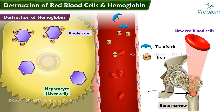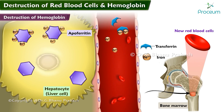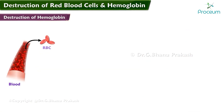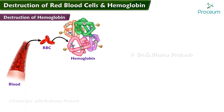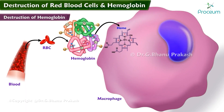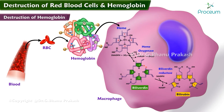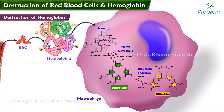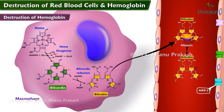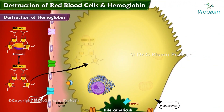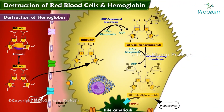for storage in the form of ferritin. The porphyrin portion of the hemoglobin molecule is converted by the macrophages through a series of stages into the bile pigment bilirubin, which is released into the blood and later removed from the body by secretion into the bile.